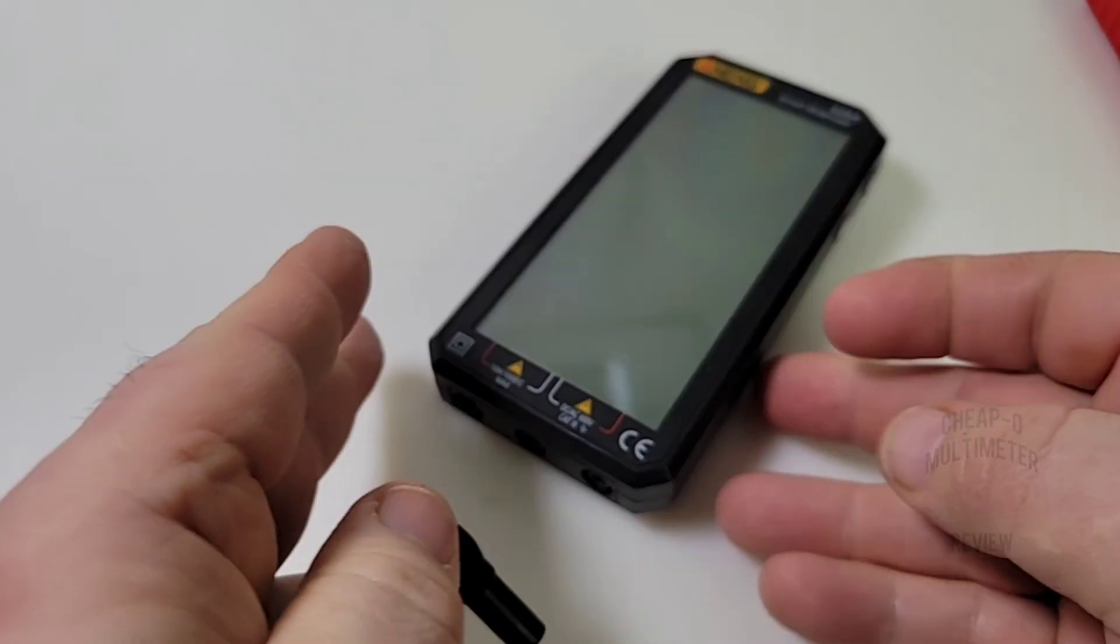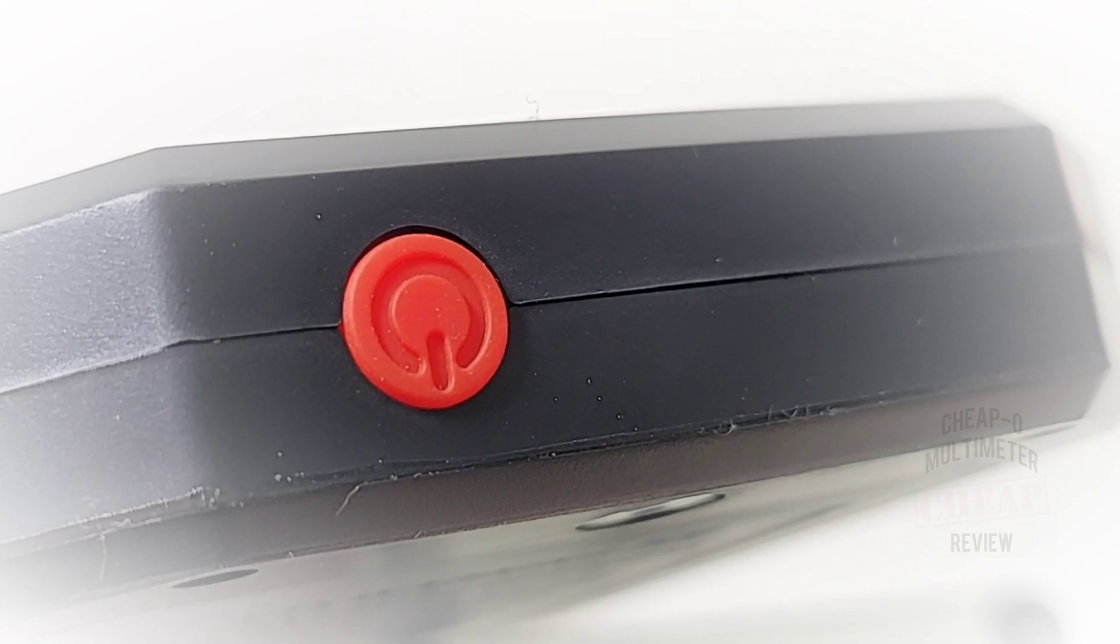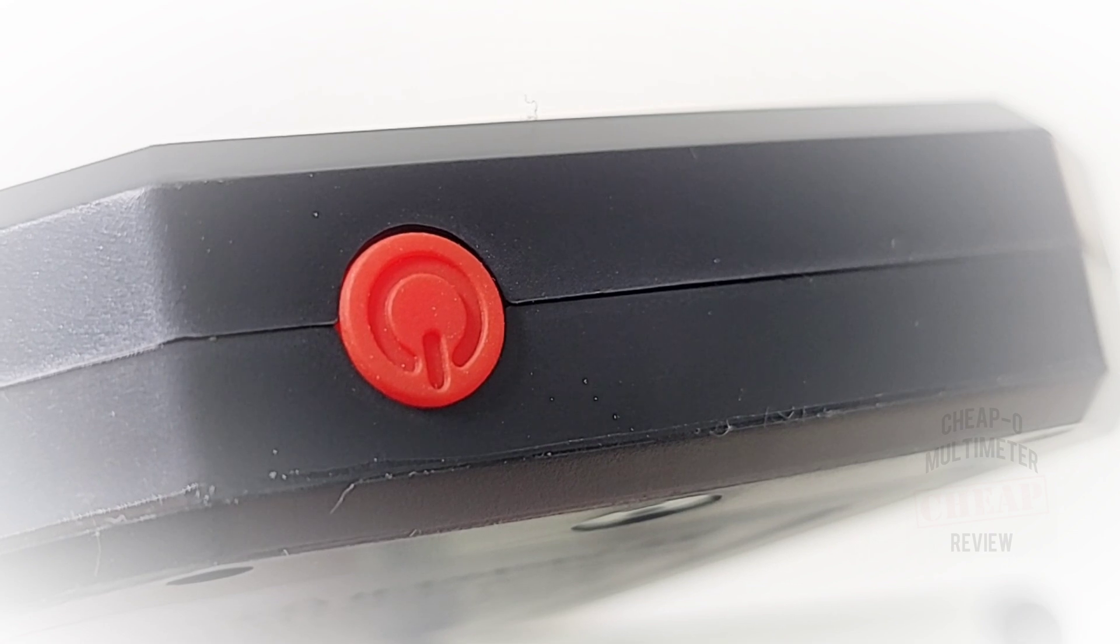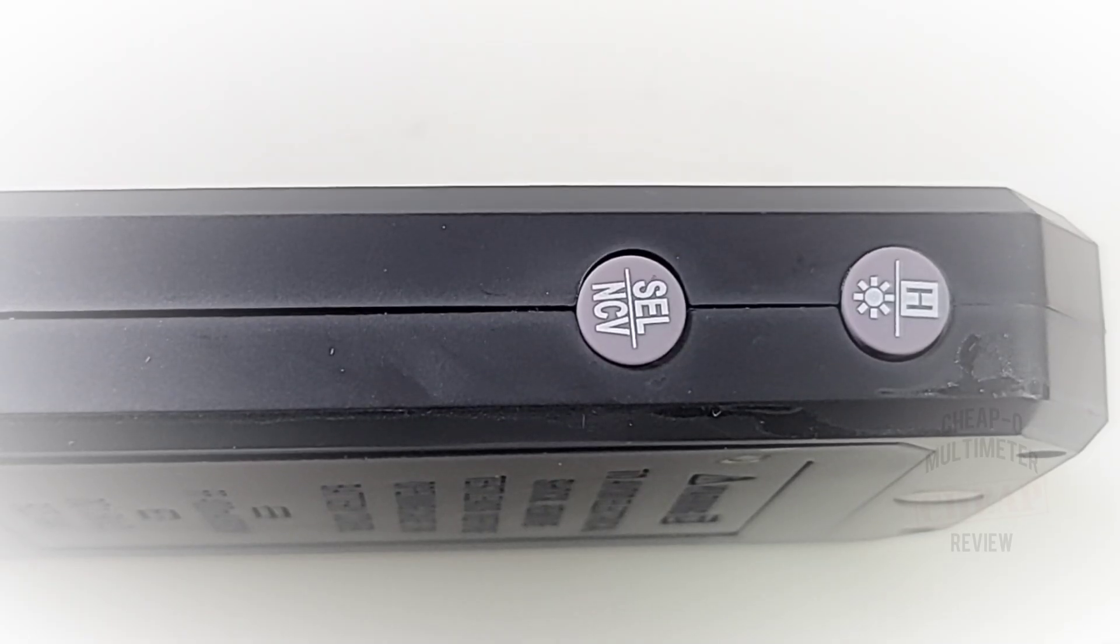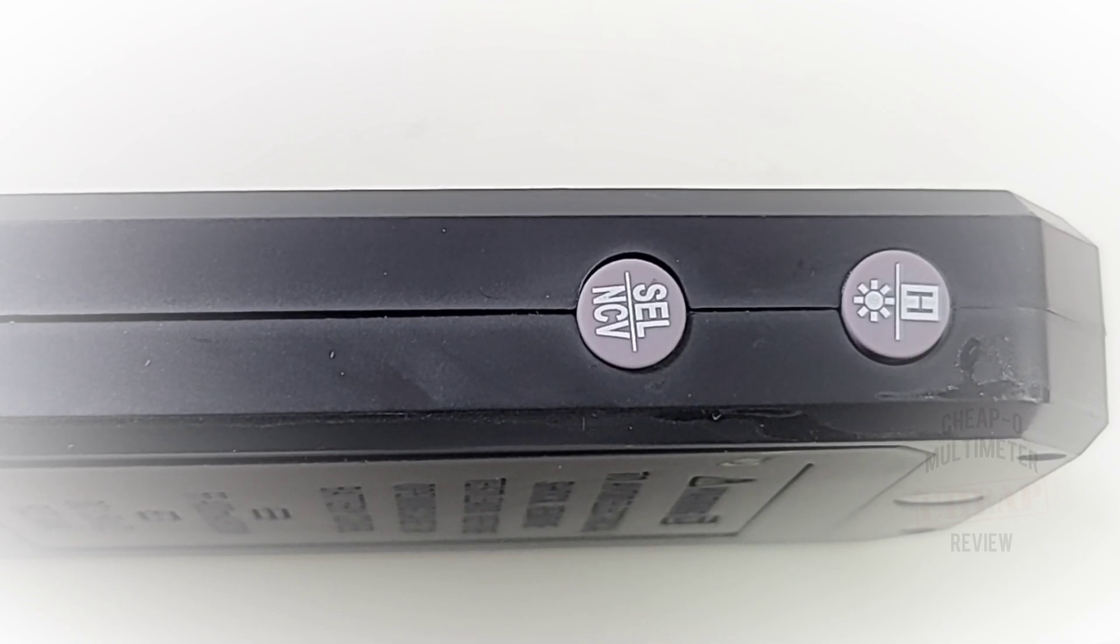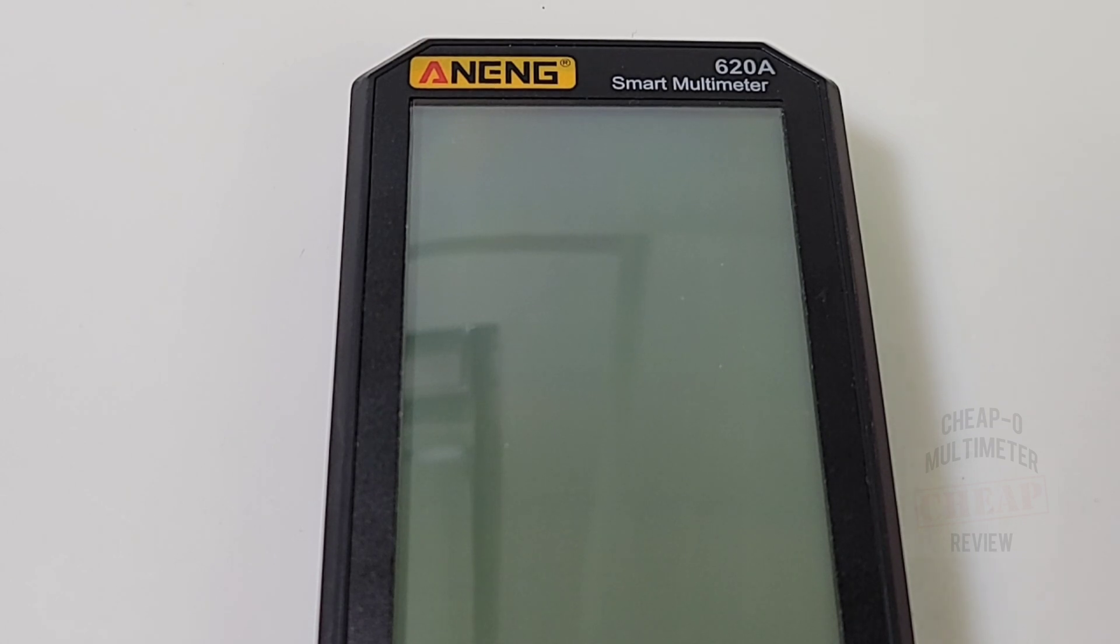At the top of the multimeter we have our on/off button, that red signifier. Hold it down to press for about two seconds and it turns on. On the side we have two buttons, hold and flashlight, as well as select and non-contact voltage.